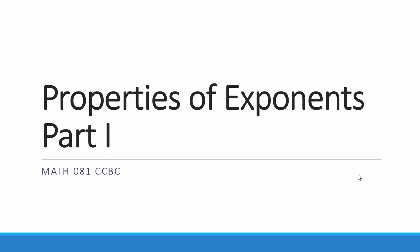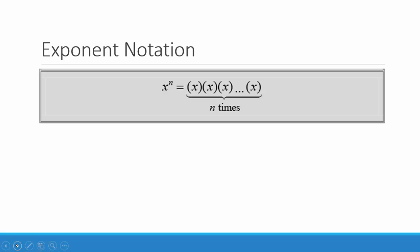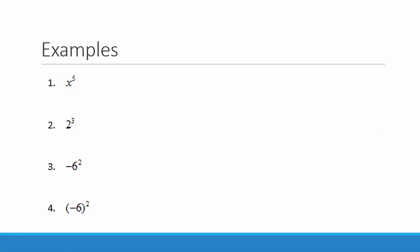In this video we will begin looking at properties of exponents. Exponent notation: x raised to the power n means to multiply x n times. In our first example we have x to the fifth, which means we will multiply x times itself five times: x times x times x times x times x.